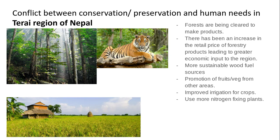They also promote a more sustainable wood fuel for locals that use wood, again so they can leave the rainforests alone. They also promote fruits and vegetables from other areas so they don't need to clear any more land to grow their own. They also improve irrigation for crops, because soil quality has decreased as crops remove nitrogen from the soil without replenishing it. Another thing encouraged is nitrogen-fixing plants in these areas to replenish and increase the soil quality.